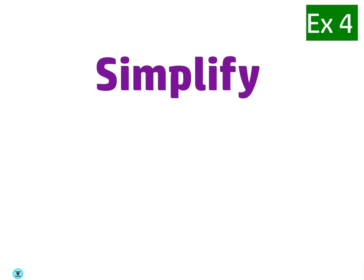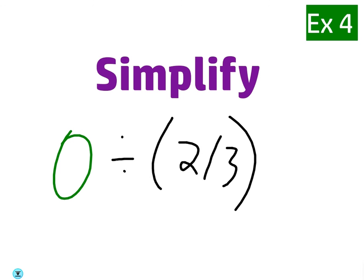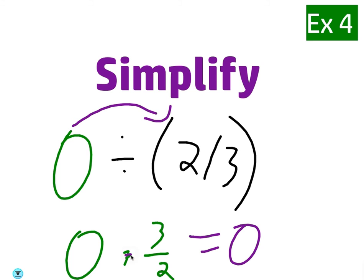See if you guys remember this rule. Zero divided by two-thirds. The answer is gonna be zero. Yes, you can do keep, change, flip. It would be zero times three-halves. But, the point is, he noticed it's zero divided by something. Which is always zero.